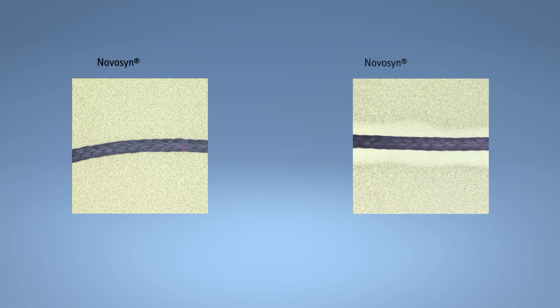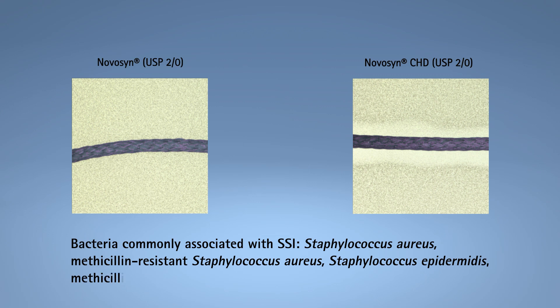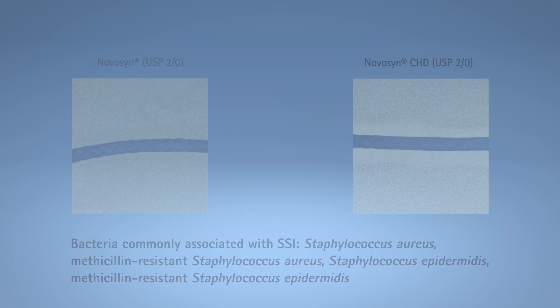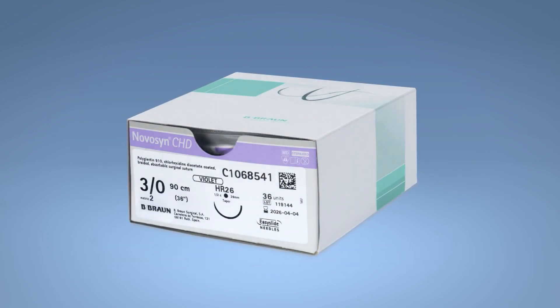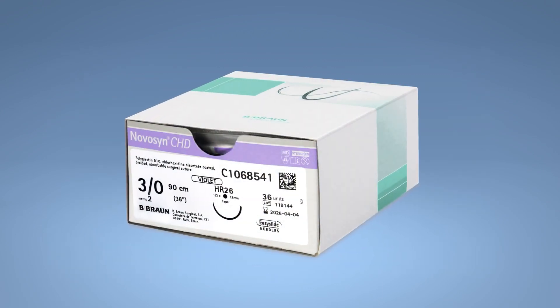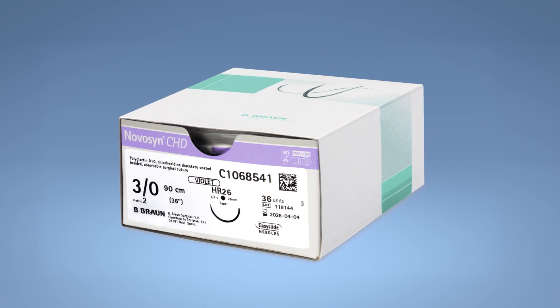Novosin-CHD has a zone of inhibition against the most common pathogens that cause SSI. Novosin-CHD helps in the prevention of microbial contamination of the implanted thread.